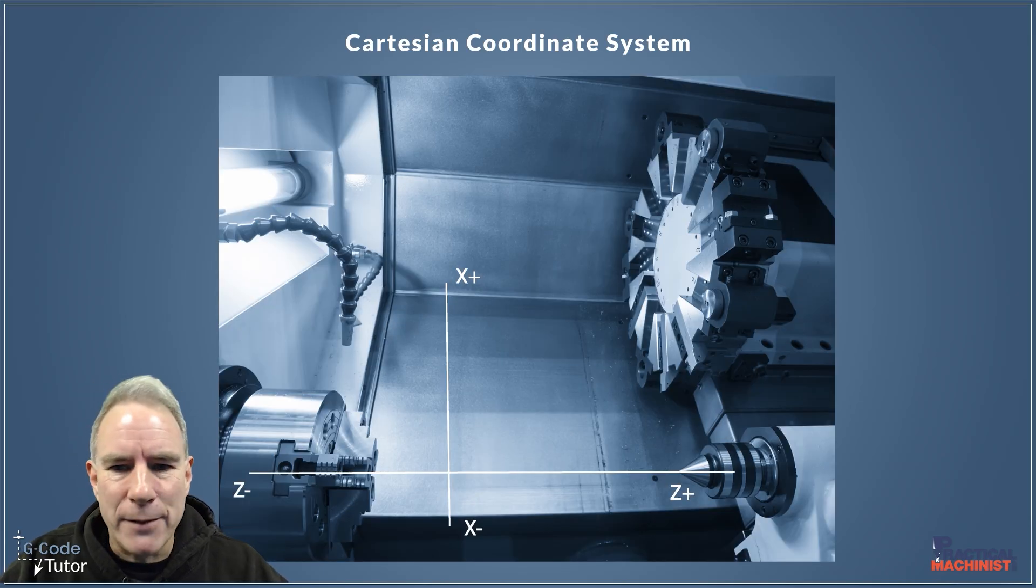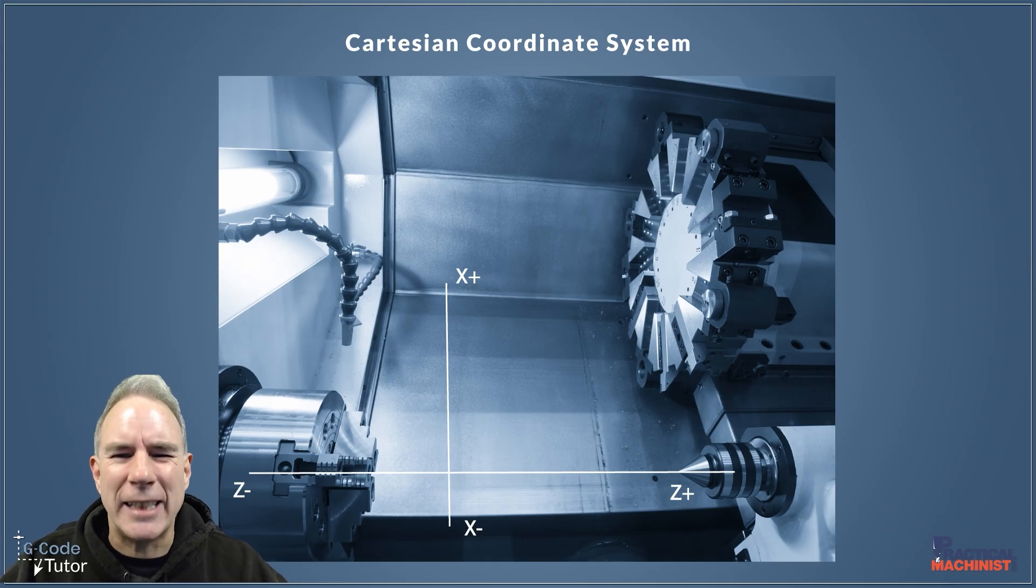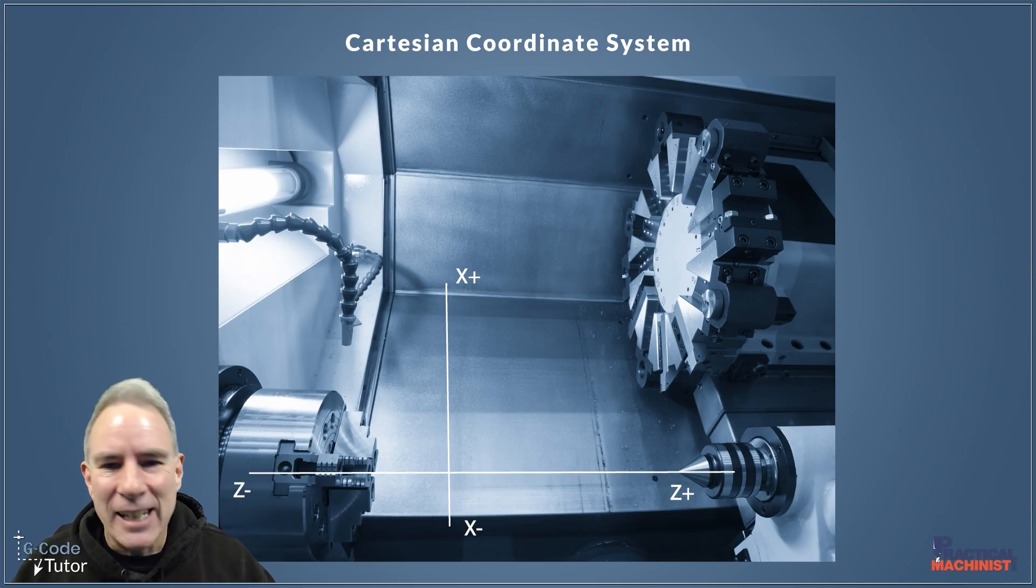Now if we move on to a lathe here, you can see it gets a little bit more simple. We've only got two axes on a basic lathe, but lathes and machine centers and mill turns can go up to a ridiculous amount of axes. So this is just the basic ones of a two axis lathe.